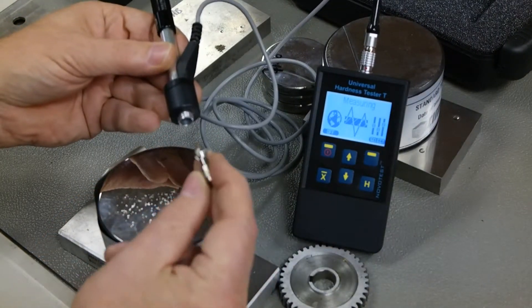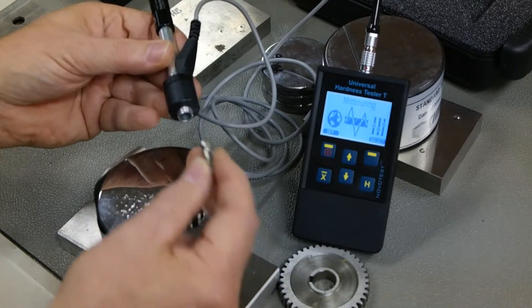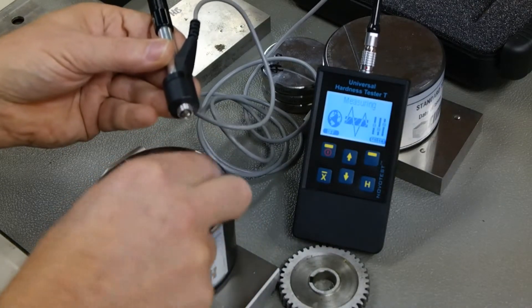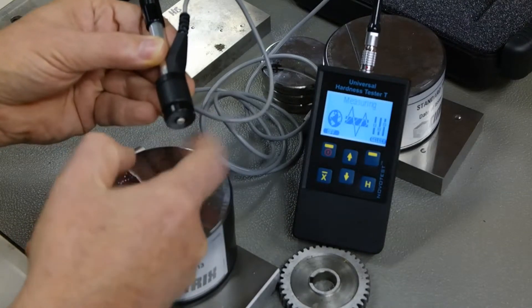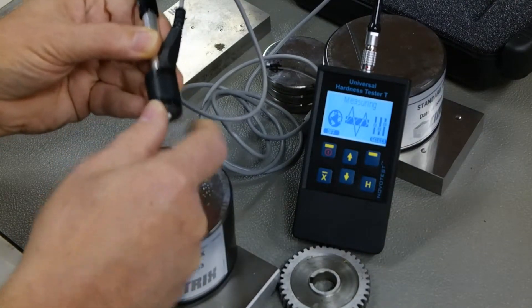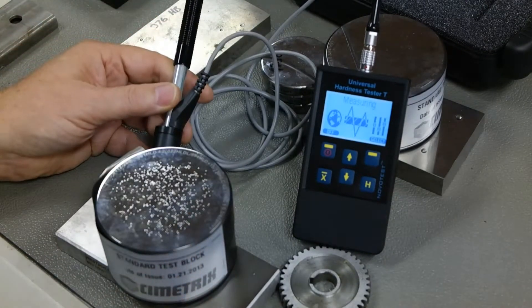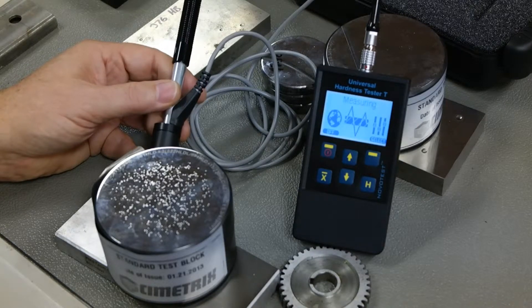The other thing that we can do with this device, because the impact body inside is very highly precision machined, and the calculations that are done based on this bouncing off the part, we can set up calibrations for this for different material types, which we have now done with the unit. So it mirrors what can be done with stand-alone rebound hardness testers.